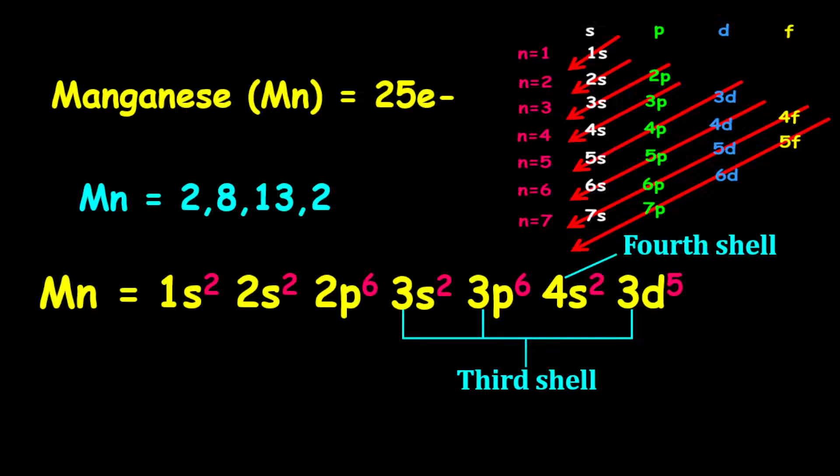The fourth shell holds the 4s orbital with two electrons. For the short-hand electron configuration, it is given as argon, followed by 4s2. Then we have 3d5.